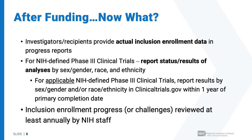If you're doing an applicable NIH-defined Phase III clinical trial, you'll need to report results of sex or gender and race and ethnicity in ClinicalTrials.gov within one year of your primary completion date. This will be submitted along with the rest of your ClinicalTrials.gov results.